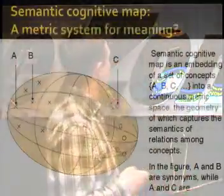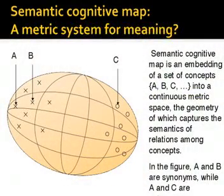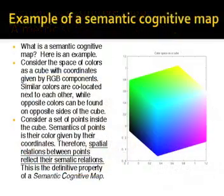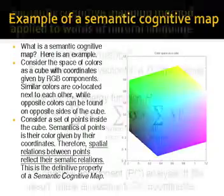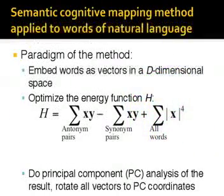Now I go back to the notion of the Concept Map. The idea in this case is to organize concepts in some abstract space in order to capture semantics geometrically, so that similar concepts would be close to each other — like synonyms — and antonyms would be separated far apart. To give an example, here is what you can do with colors just by arranging them based on RGB coordinates. You see similar colors are close to each other, and opposite colors are on the opposite side. The question is: can you do this with words? The answer is yes.